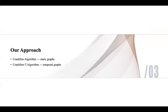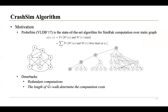Now I will show our approach. The first is the CrashSim algorithm. The SimRank score S(U,V) is the total probability that two walks W and W first meet at each node U_i. In the PropSim algorithm, the graph traverses each node U_i to identify any node V that has a non-negligible probability to walk to U_i, and this process is iterated NR times. This is the traversal tree in the case where the square root C-walk from A is ABAB. The PropSim algorithm suffers from two drawbacks: there are many redundant computations during the traversal, and the length of the square root C-walk determines the computation costs, where this length can be quite large.